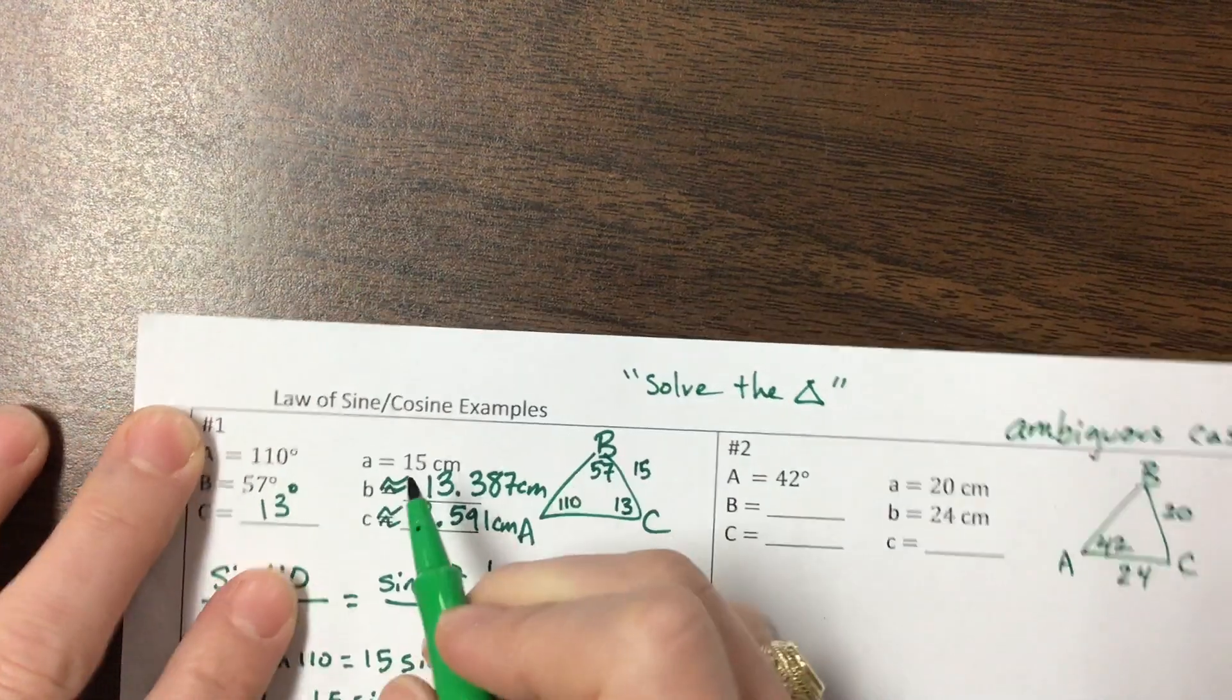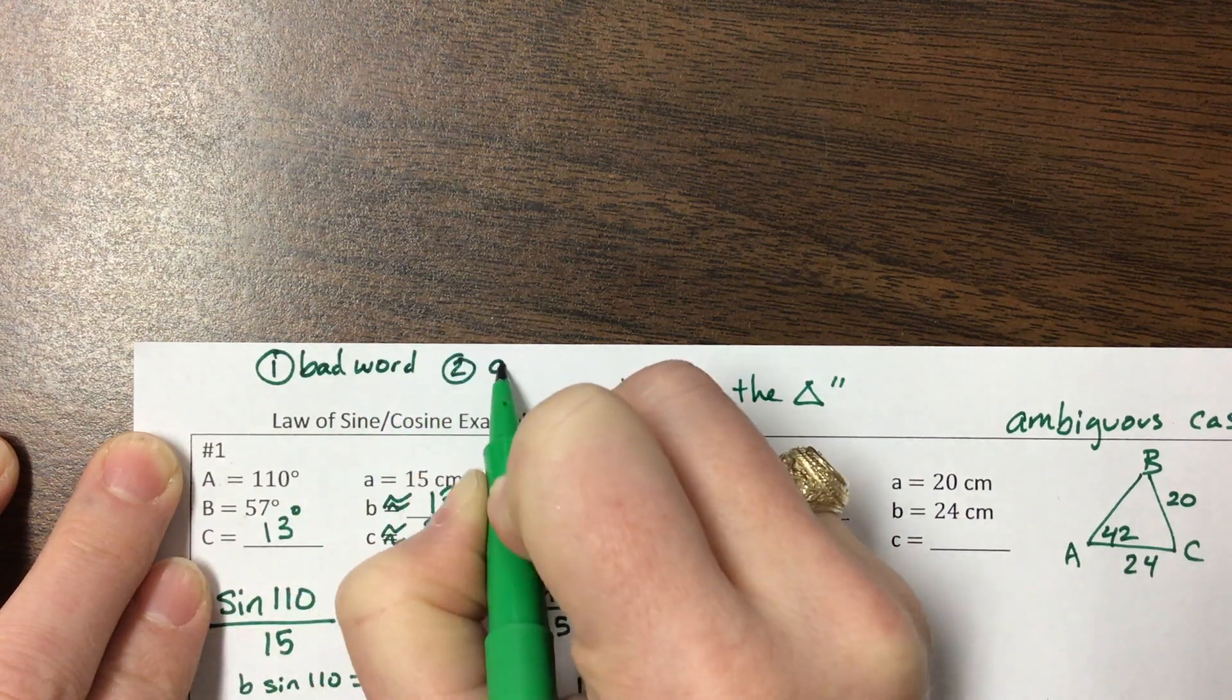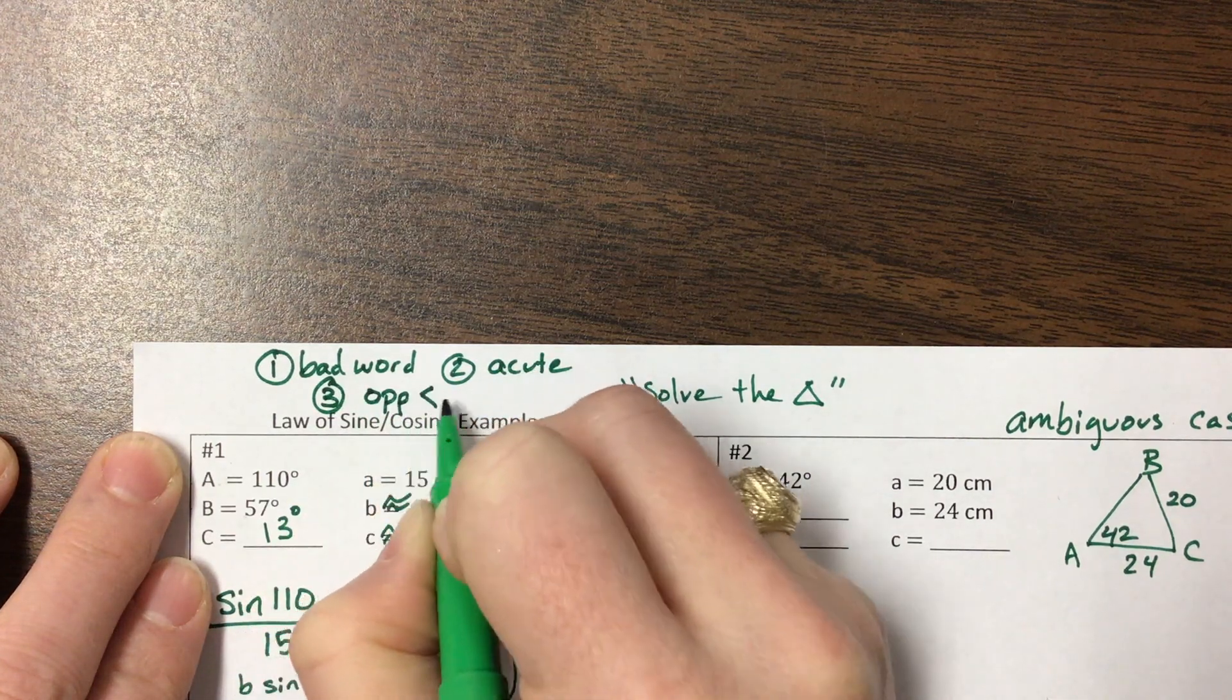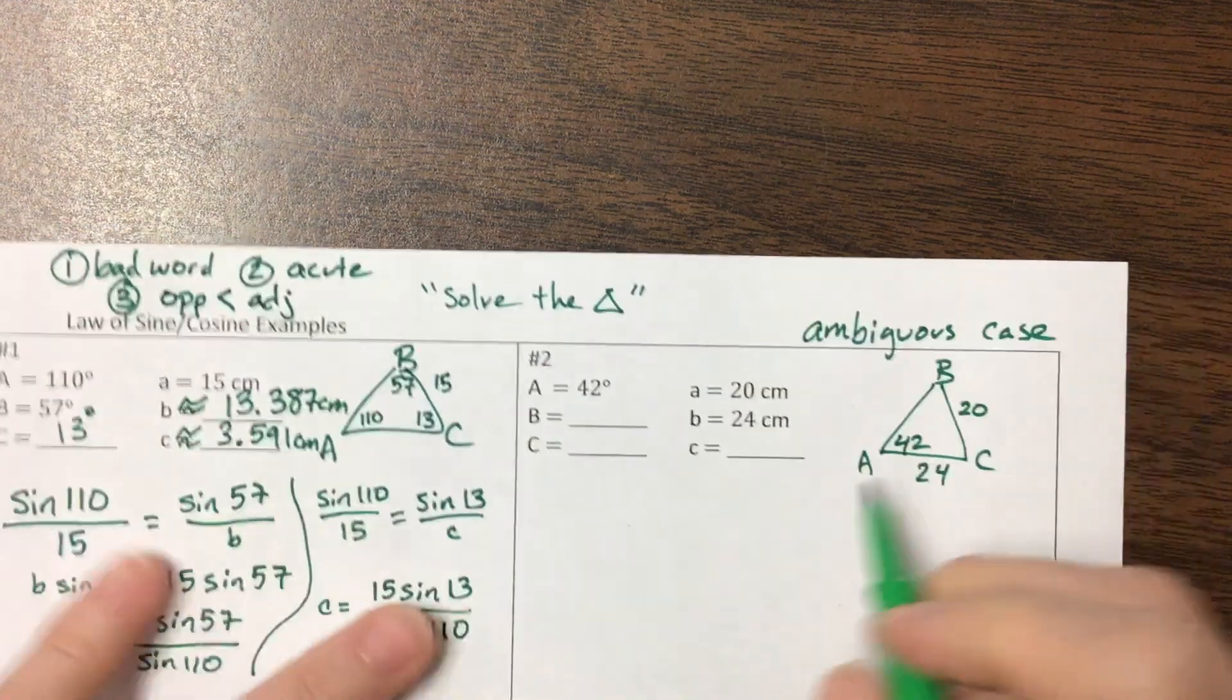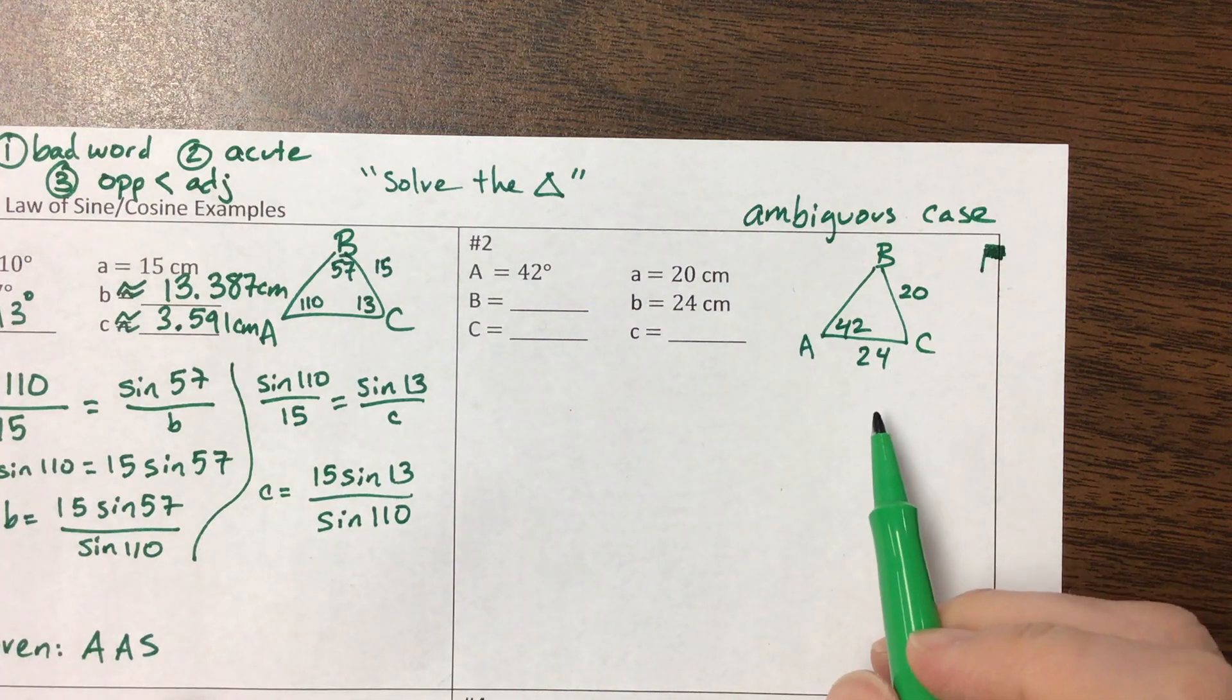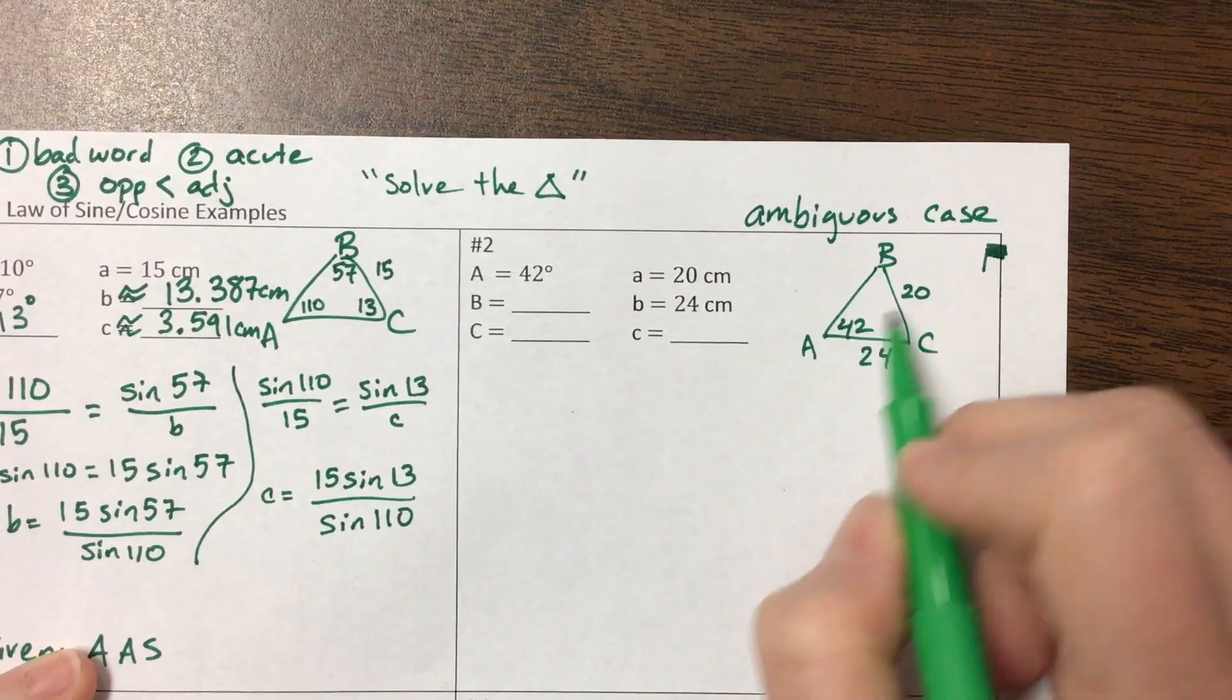So whenever we see that scenario, when all three of those things are met: number one was bad word, number two was acute, we've answered yes, we answered yes. The third thing was, is the opposite smaller than the adjacent? And if we answer yes to all three of those things, she would have her kids put a little red flag. And that tells you that there's either going to be two triangles or there's going to be no triangles.